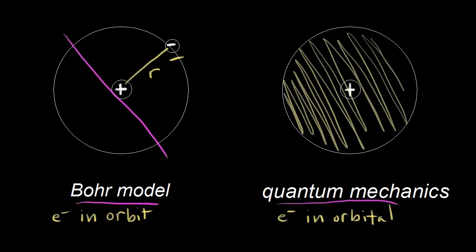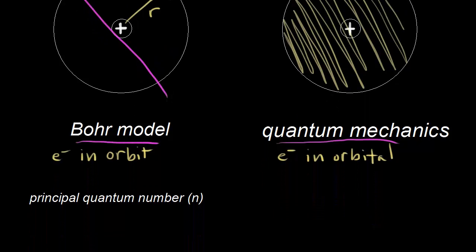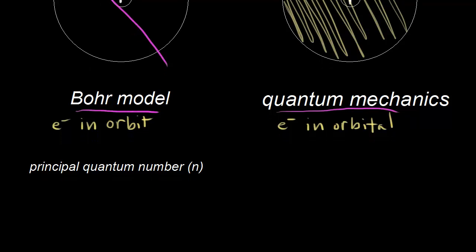Quantum mechanics has proven to be the best way to explain electrons in orbitals, and we can describe those electrons using the four quantum numbers. The first is called the principal quantum number, symbolized by n. n is a positive integer — it could be one, two, three, and so on — and it indicates the main energy level occupied by the electron.